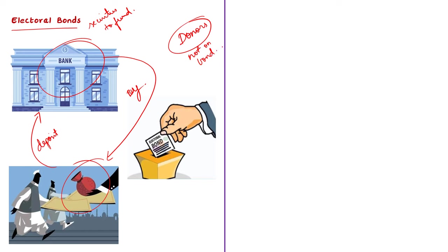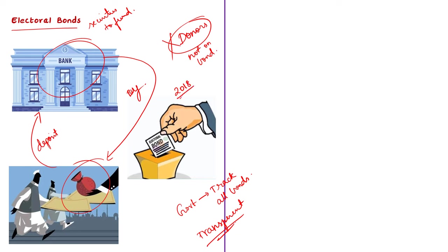Even though the donor's name is hidden, the government keeps track of all electoral bonds that are issued and checks how much money each political party gets. In this way, it is aimed to be transparent and eliminate illegal funding to political parties. Electoral bonds were first introduced in 2018. The scheme was introduced as part of the Finance Bill 2017. These bonds are only available in the State Bank of India and not in any other banks.